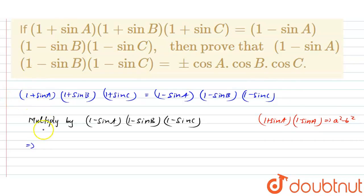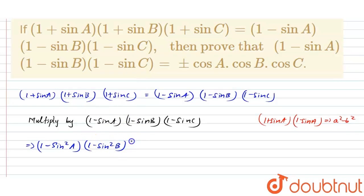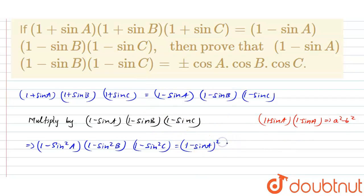So the value is 1² minus sin² A, which equals (1 - sin² A). Same for (1 + sin B)(1 - sin B), giving (1 - sin² B), and (1 + sin C)(1 - sin C), giving (1 - sin² C). This equals (1 - sin A)²(1 - sin B)²(1 - sin C)².